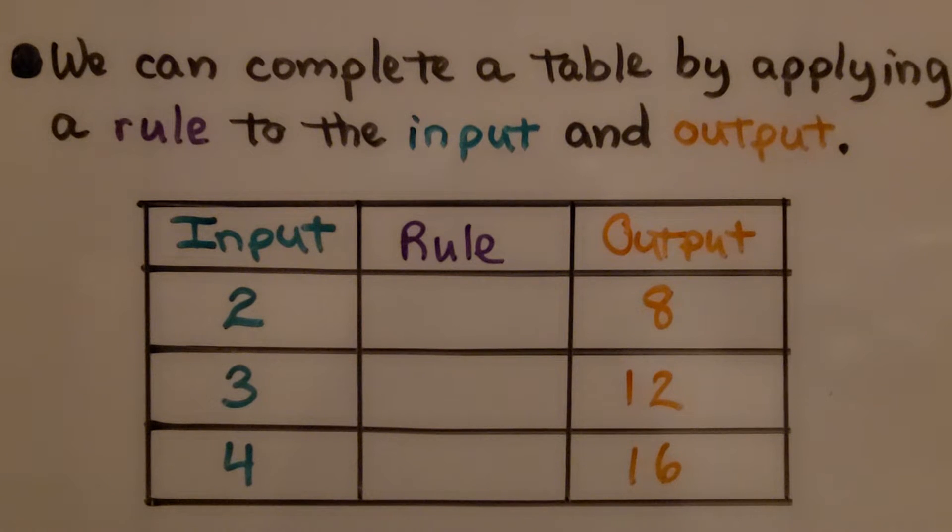Now take a look at this table. We can complete a table by applying a rule to the input and output. We look what's happening with the input. It's going up by 1. It's going 2, 3, 4. So each one is going up by 1.